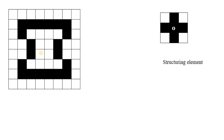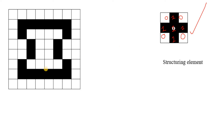For region filling we take one structuring element, which is the diamond structuring element. We always use the diamond structuring element only. Here the center and its four neighbors are one, and the corner parts are zero. As you know, in morphological image processing I have used this particular structuring element in several applications.